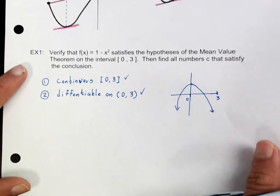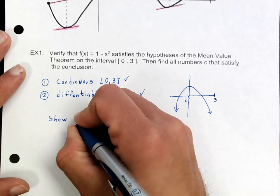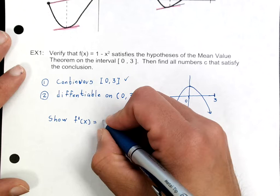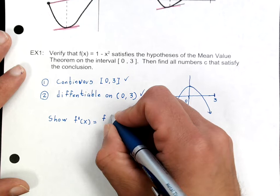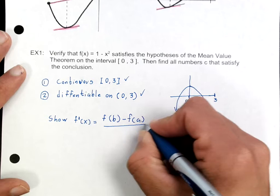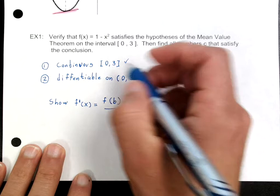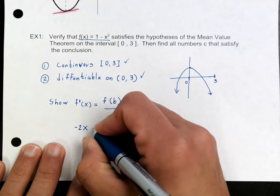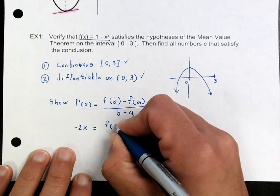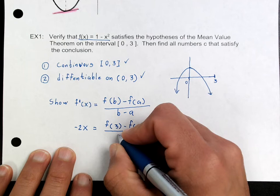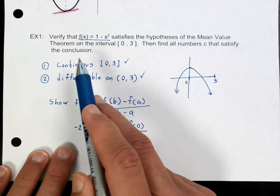Now they want us to show that there is a point where the derivative is equal to the average rate of change on the interval between 0 and 3. I'm writing the formula and plugging into it. F prime of x — you have to first take the derivative of this function — so the derivative of f of x is going to be negative 2x. Then I set up f(3) minus f(0) over 3 minus 0.